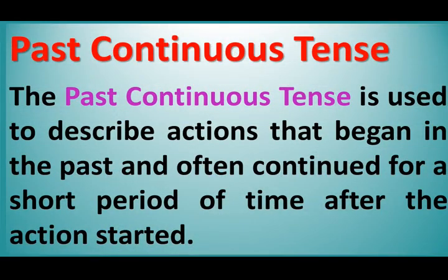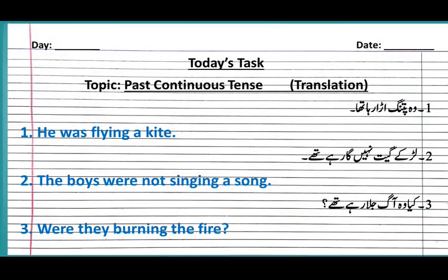Past continuous tense is used to describe actions that began in the past and often continued for a short period of time after the action started. We are going to recall the formation of sentences. For simple sentences: subject + was/were + first form of verb with -ing + object. For example: 'He was flying a kite.'